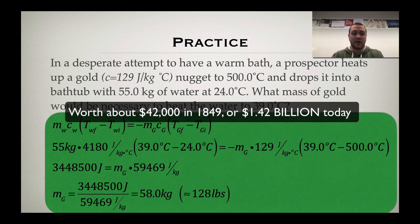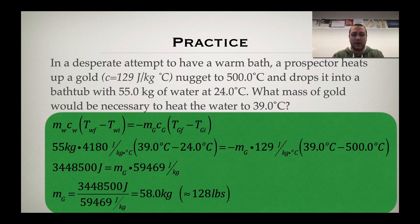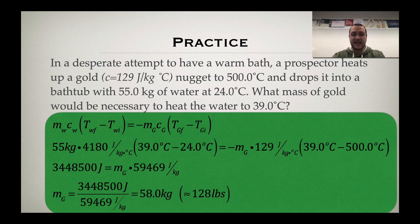So this prospector struck it rich by having a 58 kilogram, or 128 pound chunk of gold. I don't know where he's finding a bathtub to fit all that gold, but good for that prospector, because that person is now filthy stinking rich — if this were the gold rush in the 1800s.